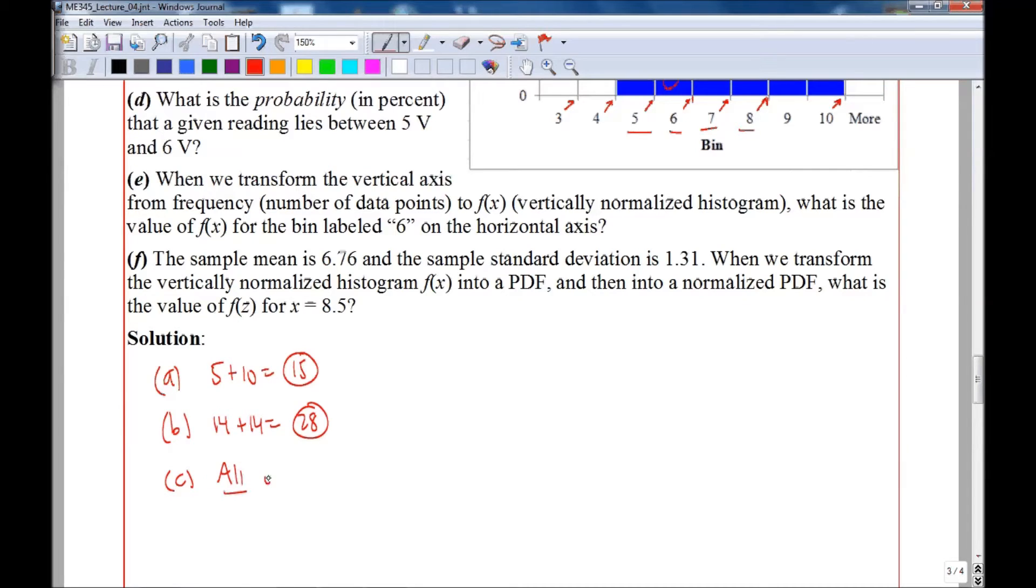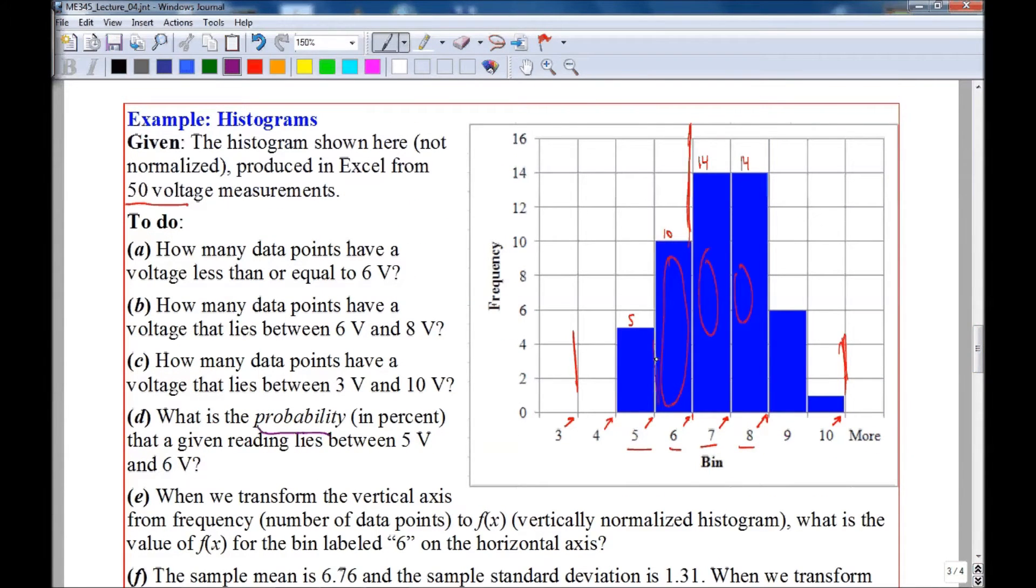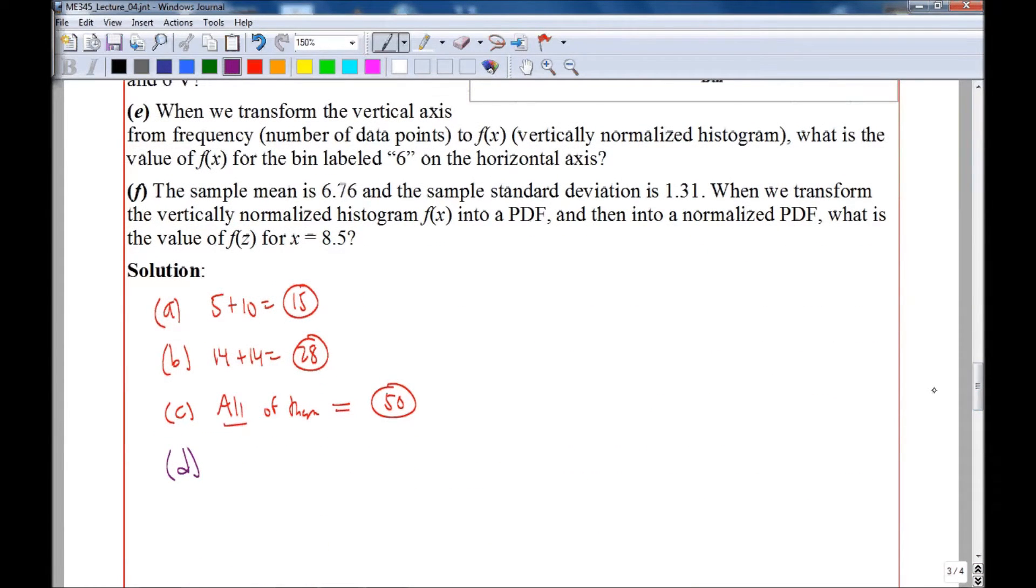Part D says what is the probability in percent that a given reading lies between five and six volts? So again looking at our histogram, five volts is here, six volts is here, so we want this particular bin which has 10 readings out of 50. So the frequency is 10 for x lying between five and six, or x is greater than five but less than or equal to six.